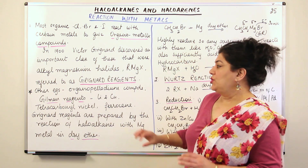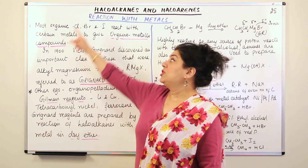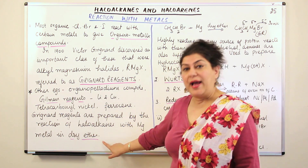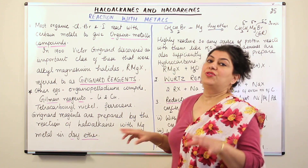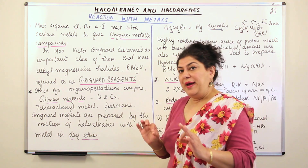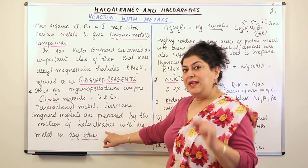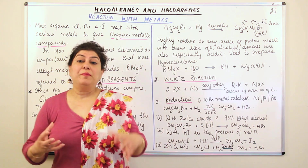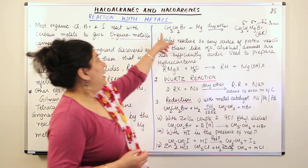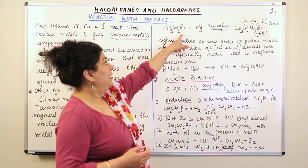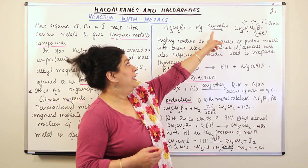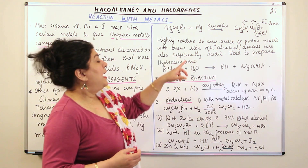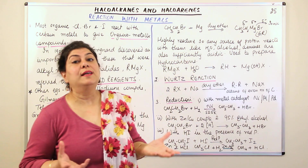Coming back to Grignard reagents, since these are the most important class of organometallic compounds in haloalkanes — how are they prepared? They are prepared by the reaction of haloalkanes with magnesium metal in dry ether. For example, bromoethane combining with magnesium in the presence of dry ether gives ethyl magnesium bromide — this alkyl magnesium bromide is a Grignard reagent.